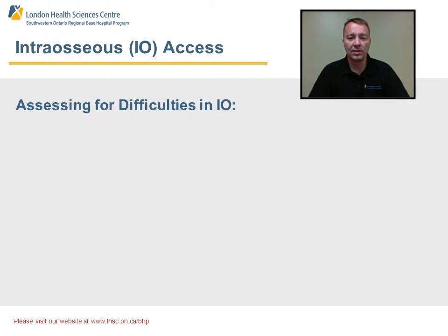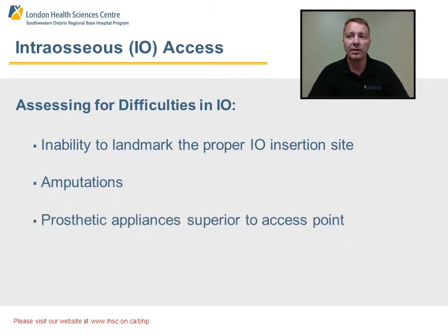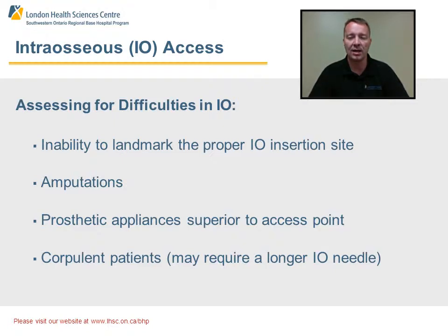When assessing for difficulties in establishing an IO needle, some difficulties encountered include being unable to find the tibial tuberosity and go two finger breadths below on the medial aspect of the tibia. People with prosthetic limbs pose a problem — obviously fluid is not going to go into a prosthetic limb. Finally, there are corpulent patients, who require a longer intraosseous needle that needs to go through the epidermal tissue, dermal tissue, subcutaneous fat, and into the tibia itself.